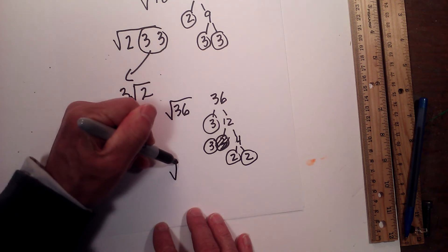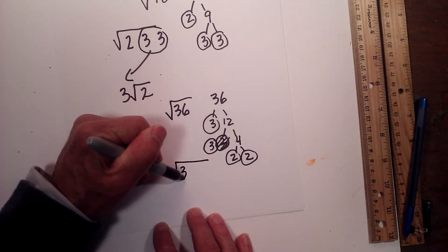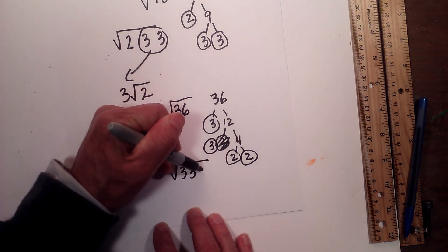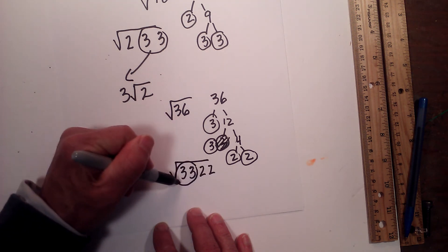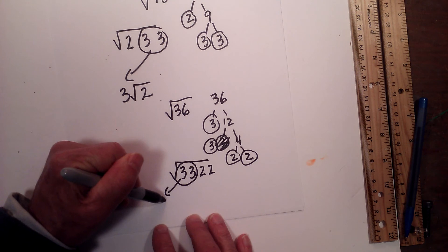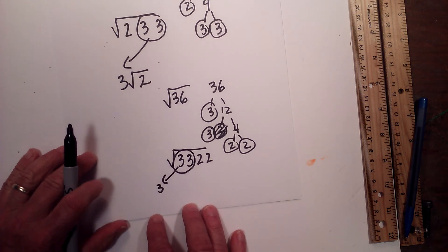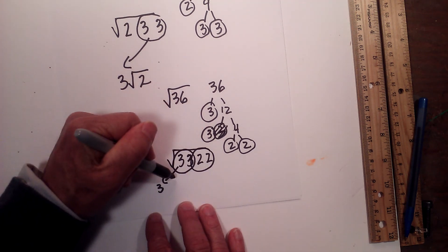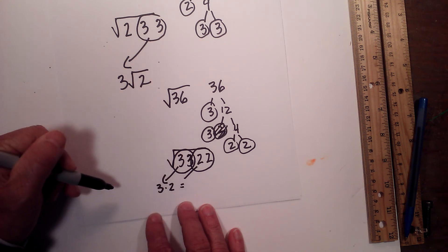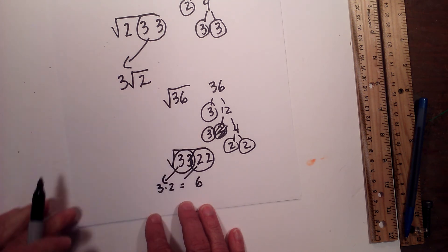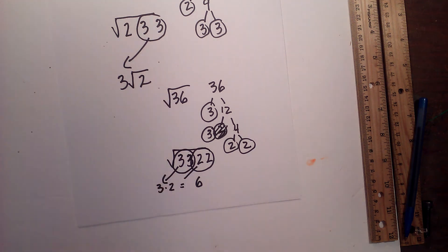Okay, now I'm going to rewrite the square root symbol. So I'm going to rewrite all the prime numbers. We have 3, 3, 2, and 2. We have 2 pairs that will come out from under. We have 3, and we have a 2. So now what we do is we multiply these two together, and that is 6. So the square root of 36 is 6.